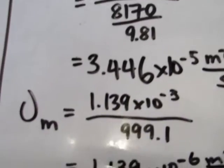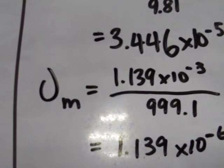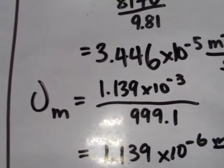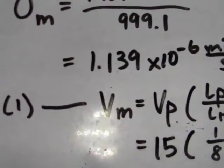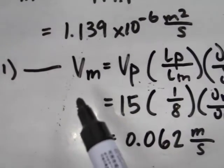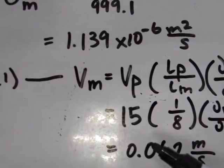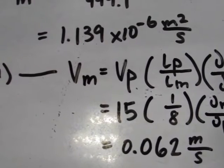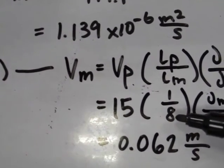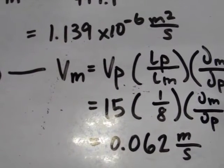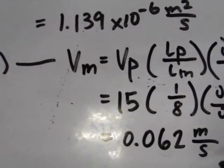Next is solving for nu of the model, which is also equal to mu over density. The mu and density of water at 15 degrees Celsius are already given, so we plug in the two values and get the answer. Going back to equation 1, we rearrange to isolate the velocity of the model. It equals the velocity of the prototype, which is 15 meters per second, times LP over LM. Since the scale ratio LM over LP is 8 to 1, this ratio is 1 over 8. Multiplying by the nu values we solved earlier, we get Vm equal to 0.062 meters per second.